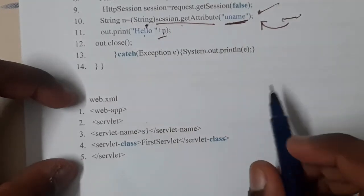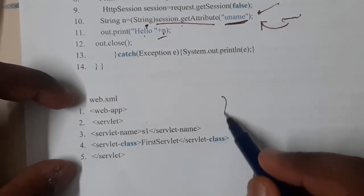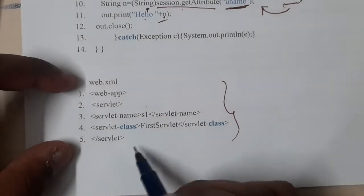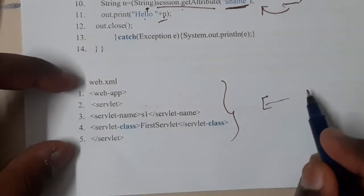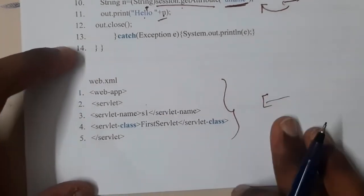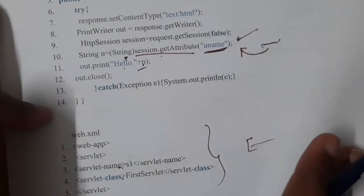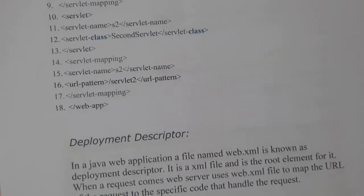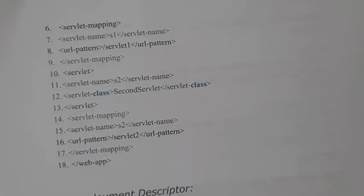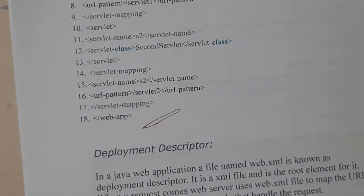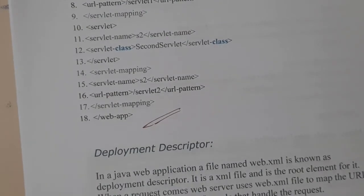The basic web.xml configuration code remains the same, and most IDEs like Eclipse will automatically generate it. You write the servlet name and class name inside the servlet tag, then map it to the particular URL with a second servlet-mapping entry.